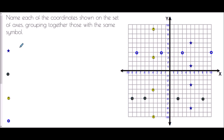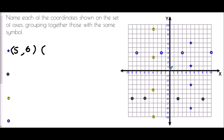Our next task is to name each coordinate shown on the set of axes, grouping them by symbol. To name a coordinate means writing it as a pair of values with a comma in between inside brackets. Starting with the star shapes — the top one: counting from zero zero, I've gone five spaces to the right and six up, so the first star coordinate is (5, 6). The next star: along five and up one, so (5, 1).